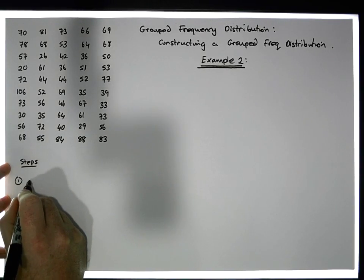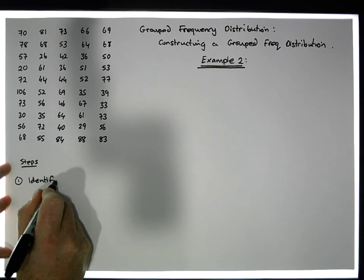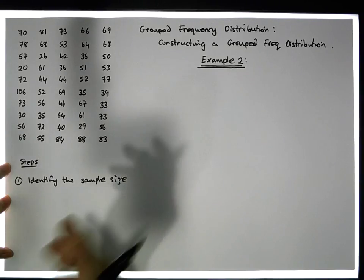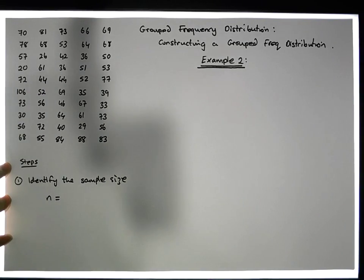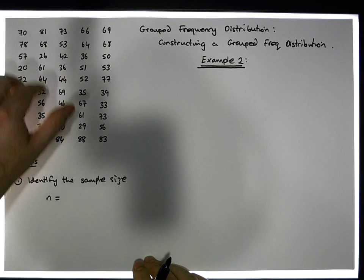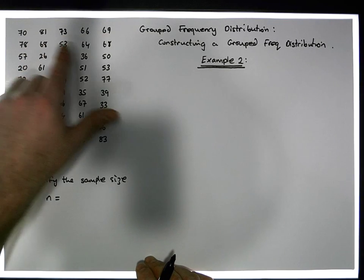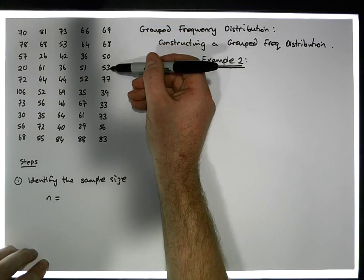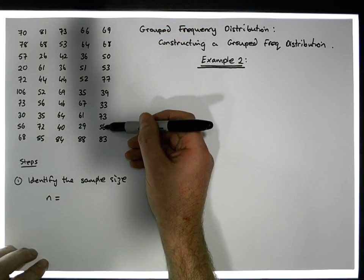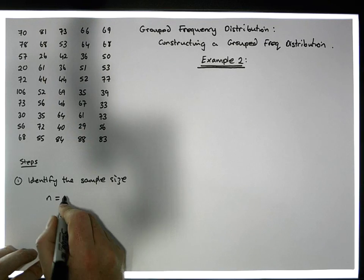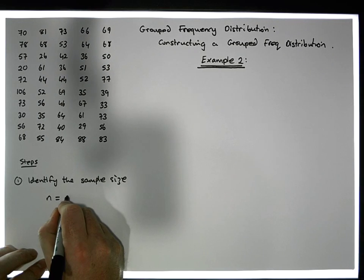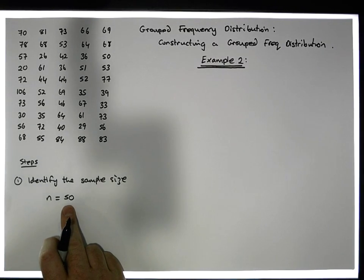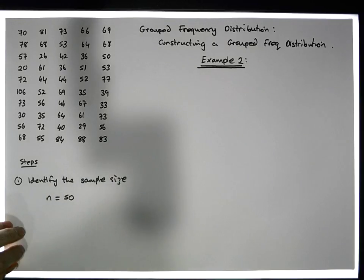Step one is to identify the sample size — small n — which is equal to how many observations we have. In this case I've got 5 observations in each row, and the number of rows is 10. So my sample size is 5 by 10, which equals 50. Don't forget the size of the sample determines how many classes we're going to have in our group frequency distribution.